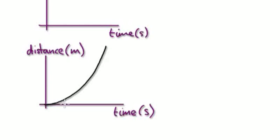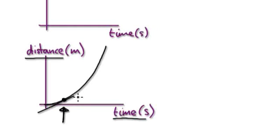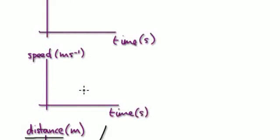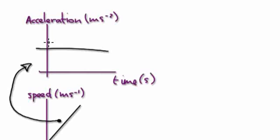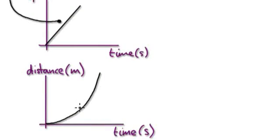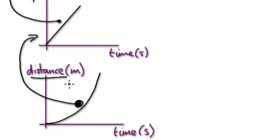So let me clarify: given a speed-time graph, the gradient of the speed-time graph represents the acceleration. And the gradient of a distance-time graph — this curve here — represents the speed. The only new thing I'm teaching you in this video is that the gradient of a distance-time graph represents the speed.